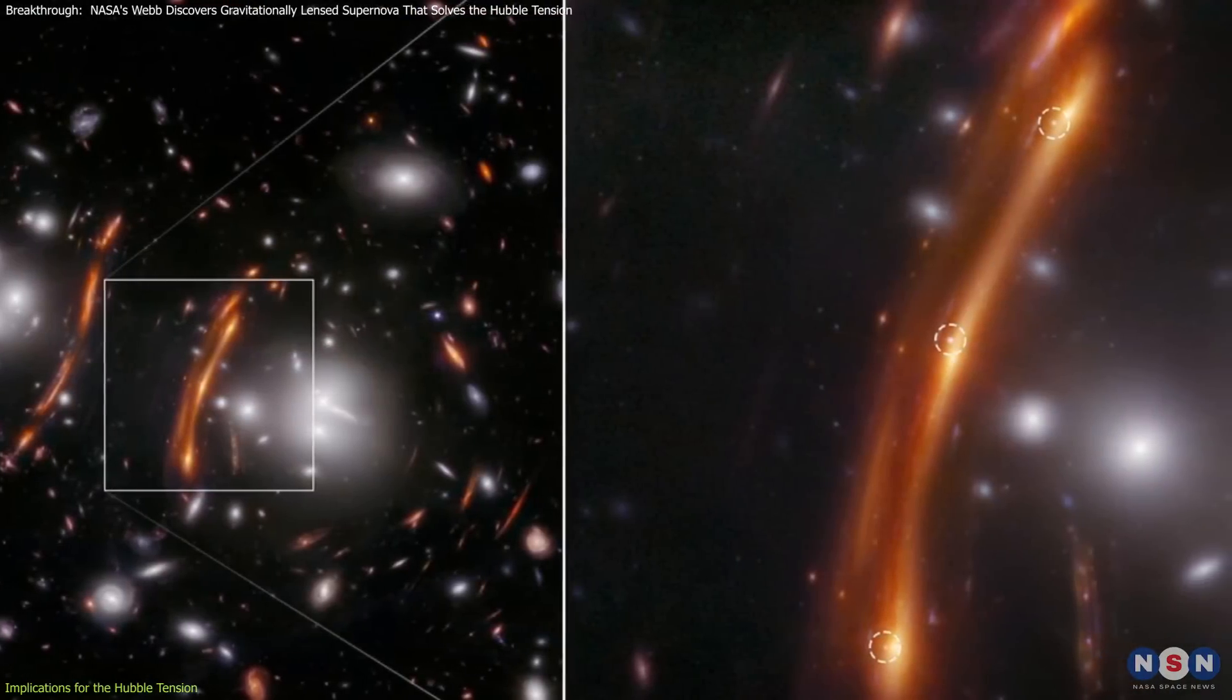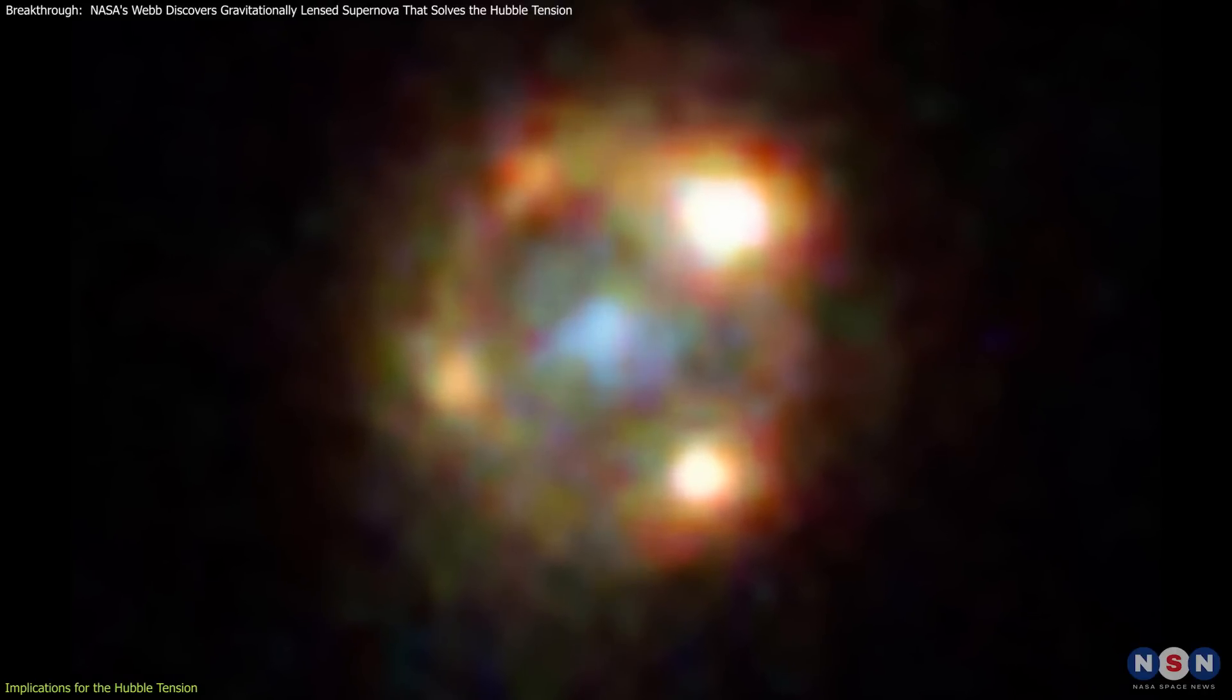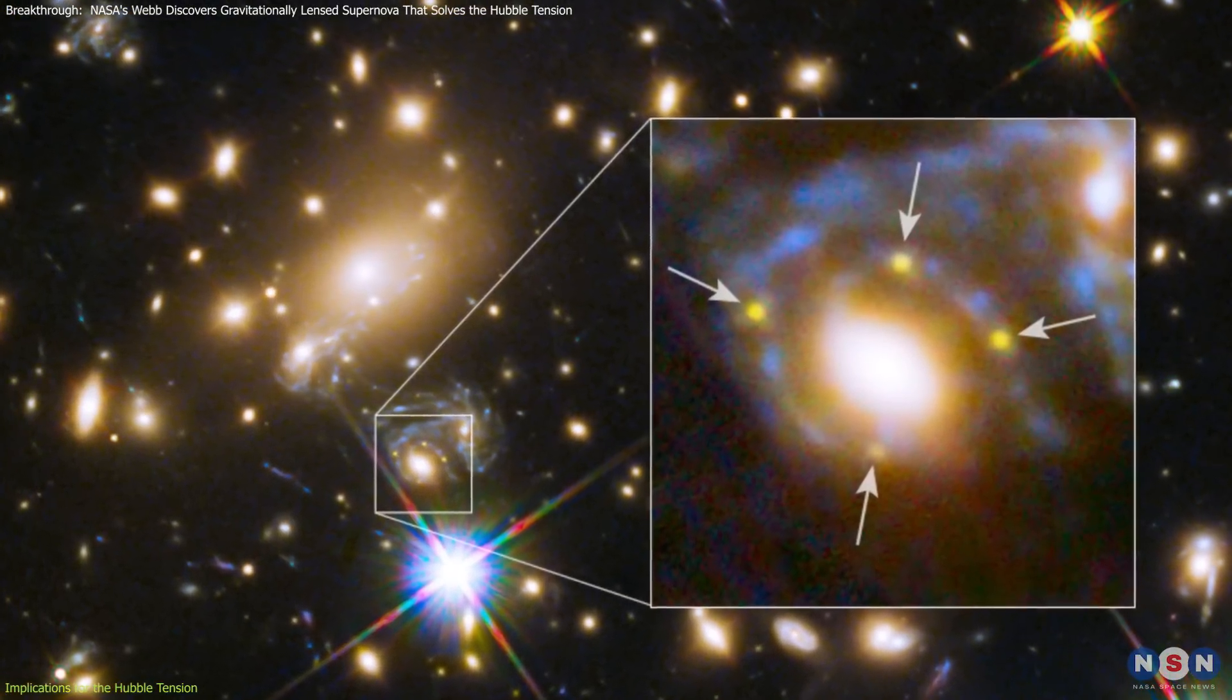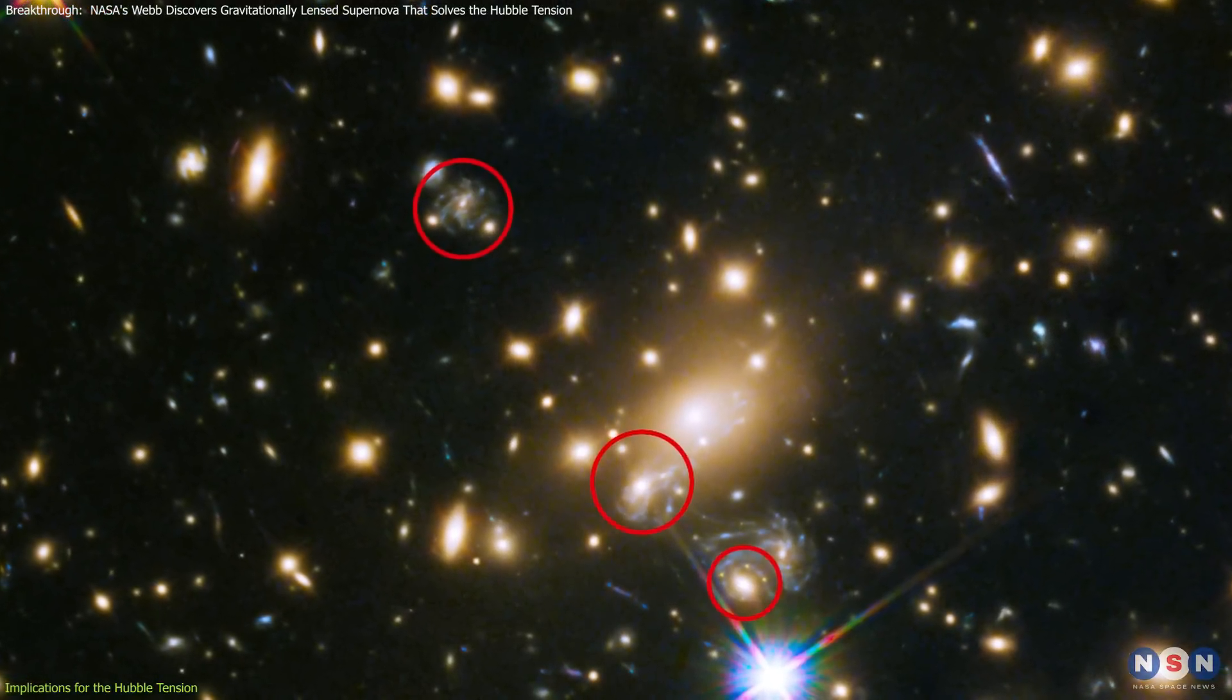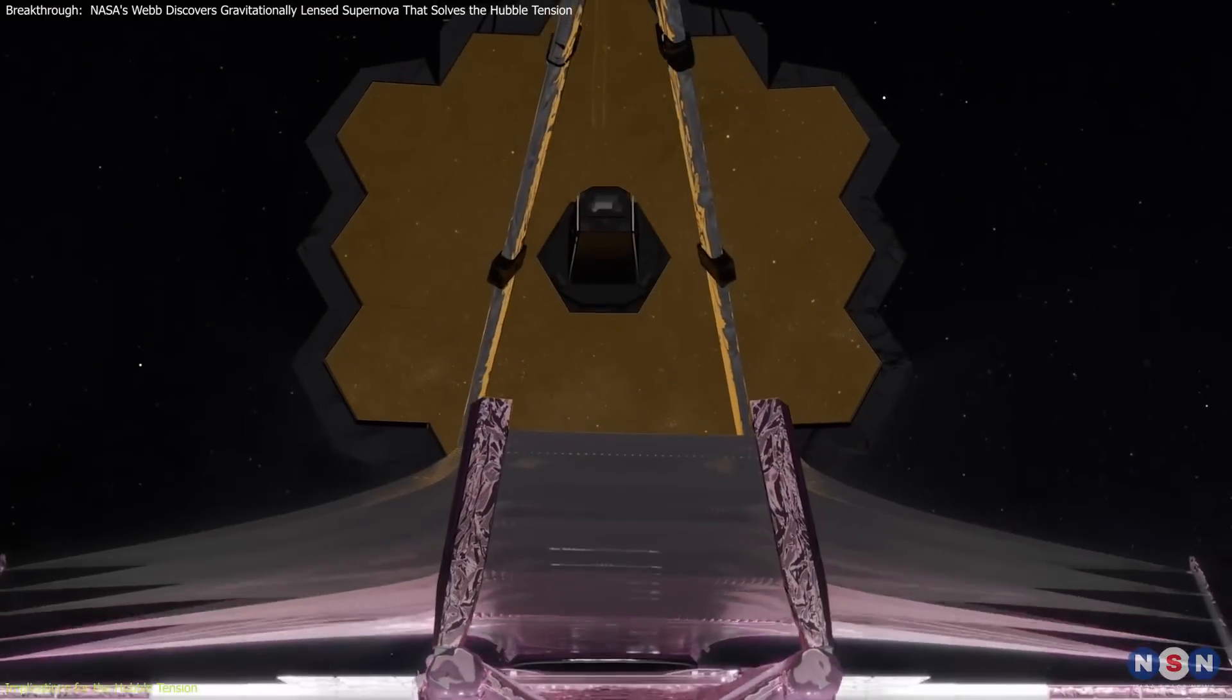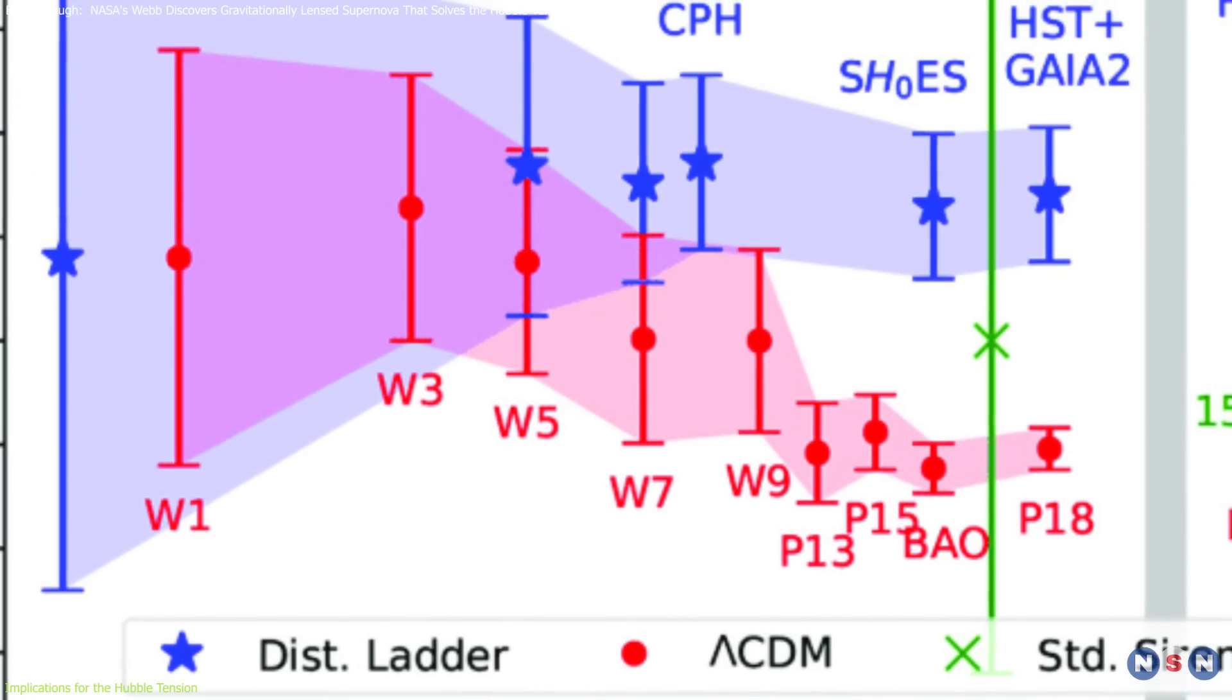But Supernova Hope isn't the first lensed supernova to contribute to this discussion. The discovery of iPTF16geu, another gravitationally lensed Type 1a supernova observed by the Hubble Space Telescope, also provided a new way to measure the Hubble constant. Similarly, SN Refsdal, the first supernova observed to be gravitationally lensed multiple times, allowed astronomers to study time delays and refine their measurements of the universe's expansion rate. However, Supernova Hope stands out due to the precision of its measurements, enabled by the James Webb Space Telescope. Its advanced instruments allow for unprecedented accuracy in observing lensed supernovae, helping to refine our understanding of the Hubble constant.